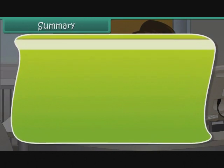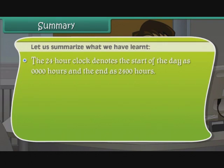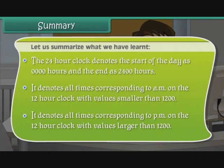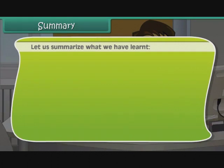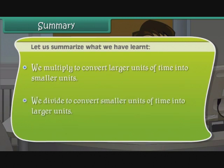Summary: The 24-hour clock denotes the start of the day as 0000 hours and the end as 2400 hours. It denotes all times corresponding to a.m. on the 12-hour clock with values smaller than 1200, and all times corresponding to p.m. with values larger than 1200. We multiply to convert larger units of time into smaller units, and we divide to convert smaller units of time into larger units.